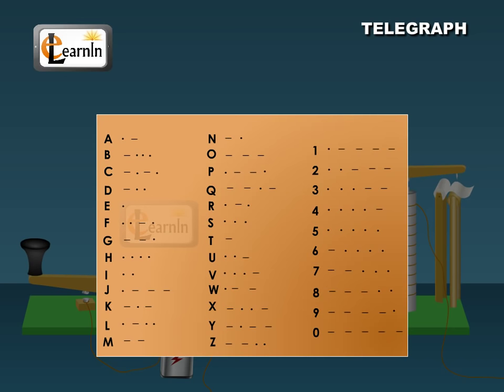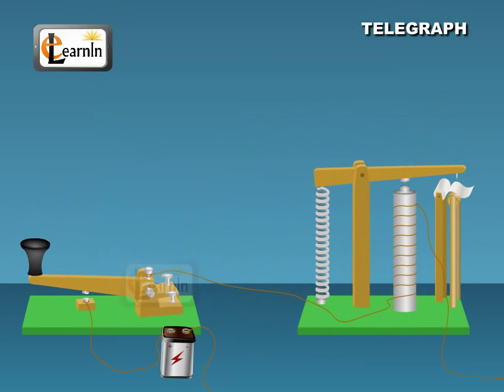The important parts of a telegraph system are the electromagnet M, battery B, Morse key K, and a long wire called cable.